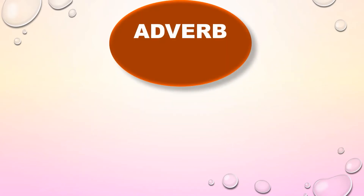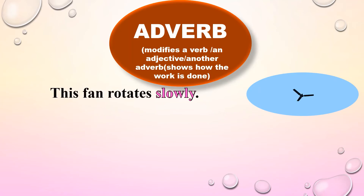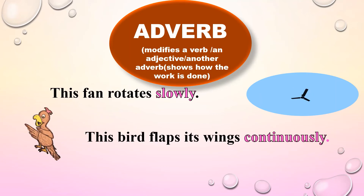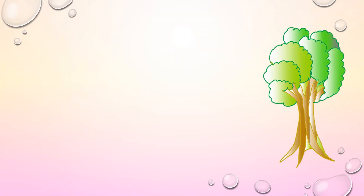Now let us see adverb. A word which modifies a verb, an adjective, or another adverb is called an adverb. It shows how the work is done. For example: this fan rotates slowly — here slowly shows how the fan rotates, so slowly is the adverb. This bird flaps its wings continuously — here continuously is the adverb. The wolf howls loudly — here loudly is the adverb, showing how the wolf howls.